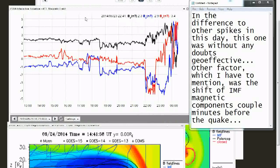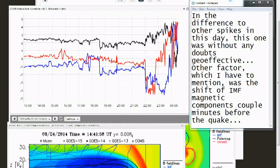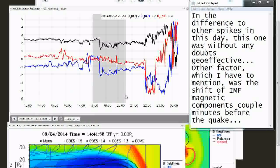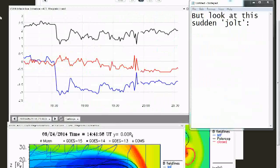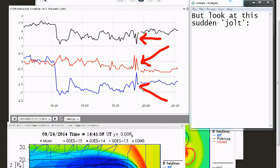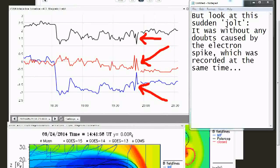Other factor which I have to mention was the shift of IMF magnetic components couple minutes before the quake. But look at this sudden jolt. It was without any doubts caused by the electron spike, which was recorded at the same time.